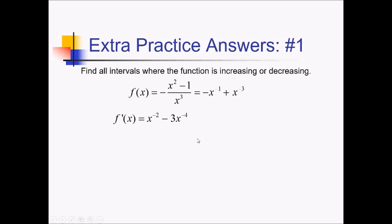Although I did take this out of fraction form to take the derivative, if I actually want to set this equal to 0 and solve, I think it's going to be easier if it's back in fraction form. So let me rewrite this as 1 over x squared minus 3 over x to the 4th. Getting a common denominator — that would be x to the 4th — so if I make this x squared over x to the 4th, I'll just write this as x squared minus 3 over x to the 4th.